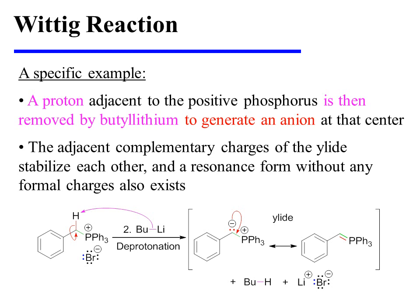When butyllithium is added in the second step, a proton adjacent to the positive phosphorus is removed to generate an anion at that center. Recall that the adjacent complementary charges of the ylid stabilize one another, and there is a resonance form without any formal charges as well.